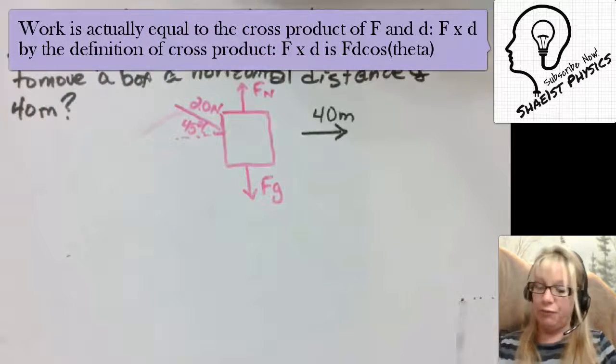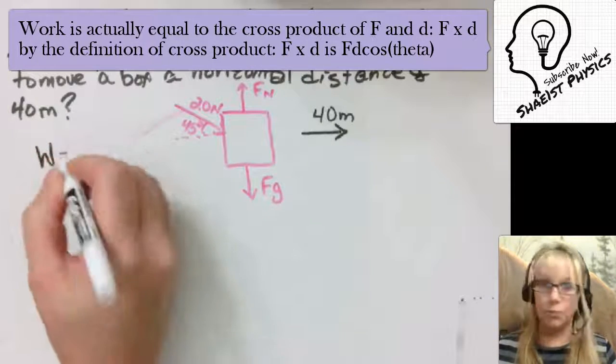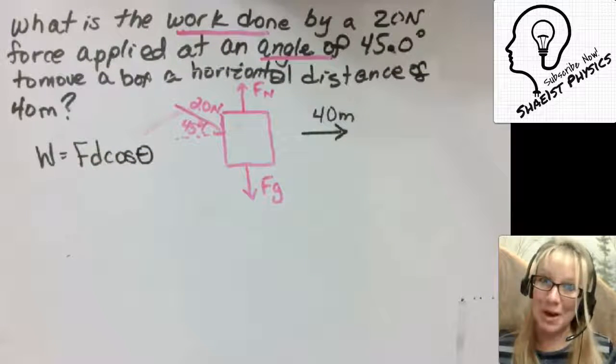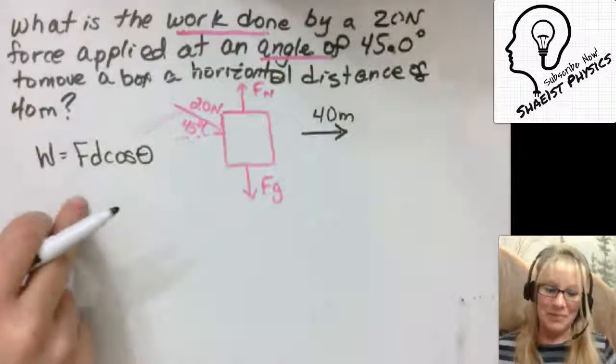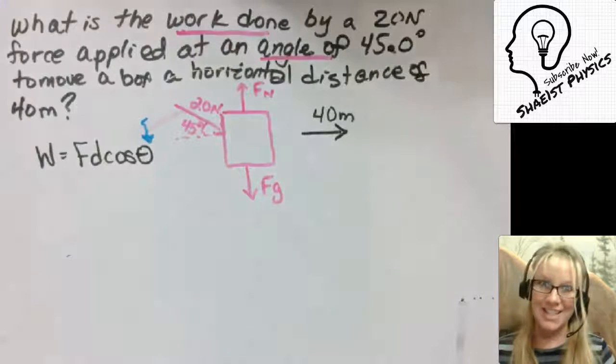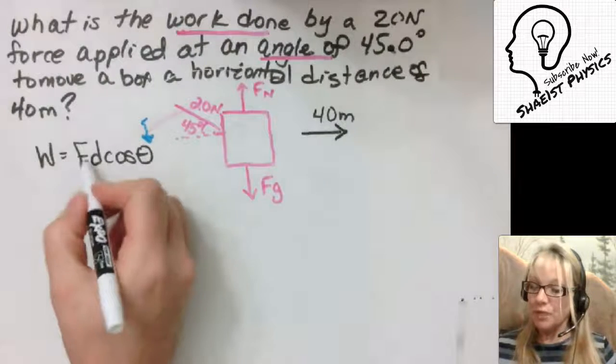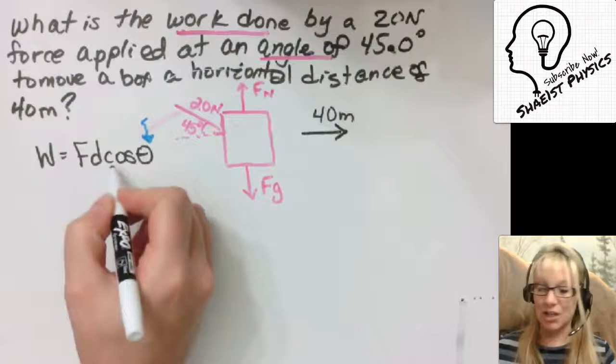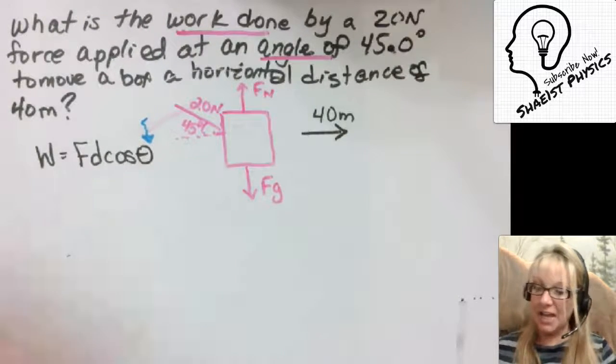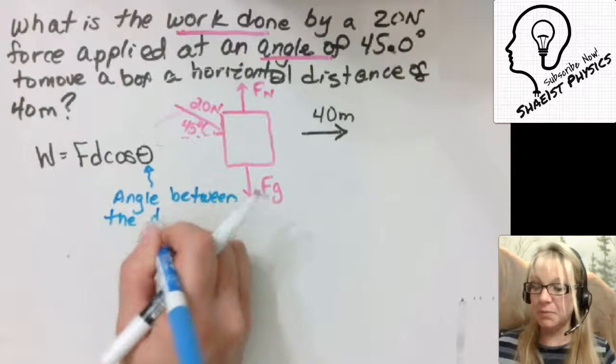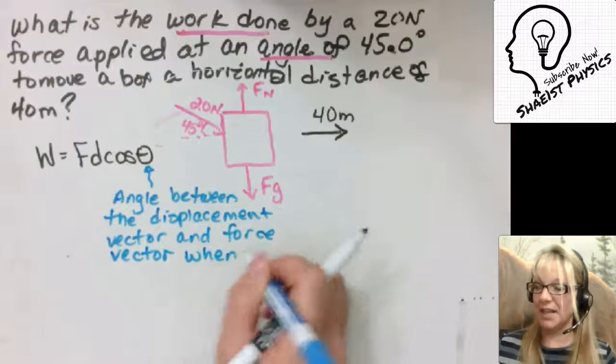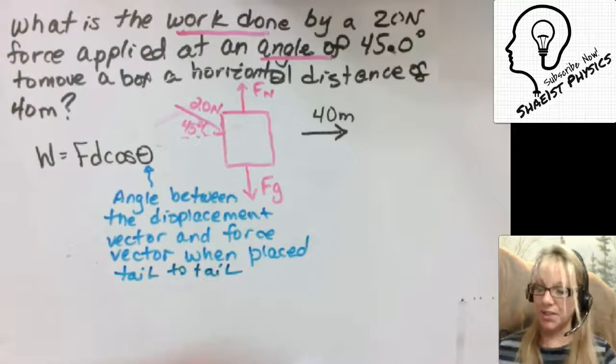So the equation for work is work is equal to Fd cosine theta. If anybody's going to have a problem with this equation, it's going to be right there and figuring out what theta is and we're going to be talking about that. So work times the displacement cosine theta. Well, theta is the angle between the displacement vector and the force vector when they're placed tail to tail. And that's the most important thing.